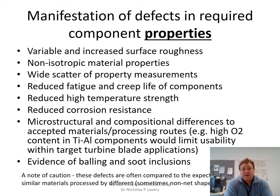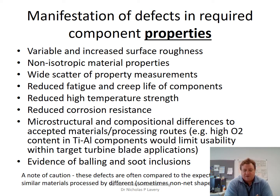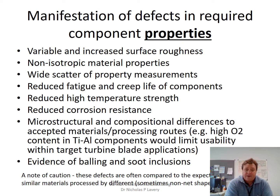This can lead to a wider scatter of properties — you might have variance on the yield strength which is measured. For critical applications this is very important; for an aero engine, for example, there are very strict rules on the levels of scatter from tensile tests. Properties such as porosity or inclusions will affect the fatigue strength and creep life, and this has to be factored into the build.